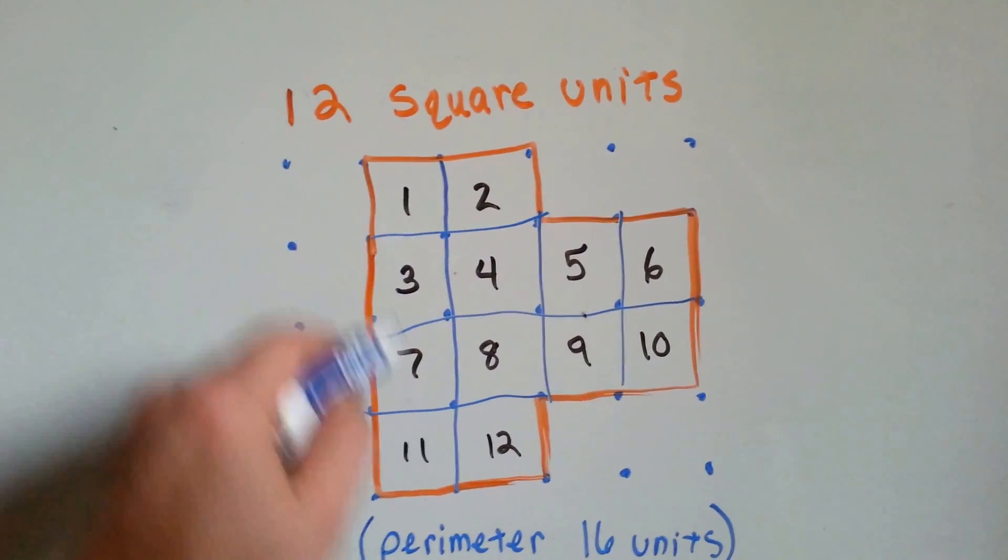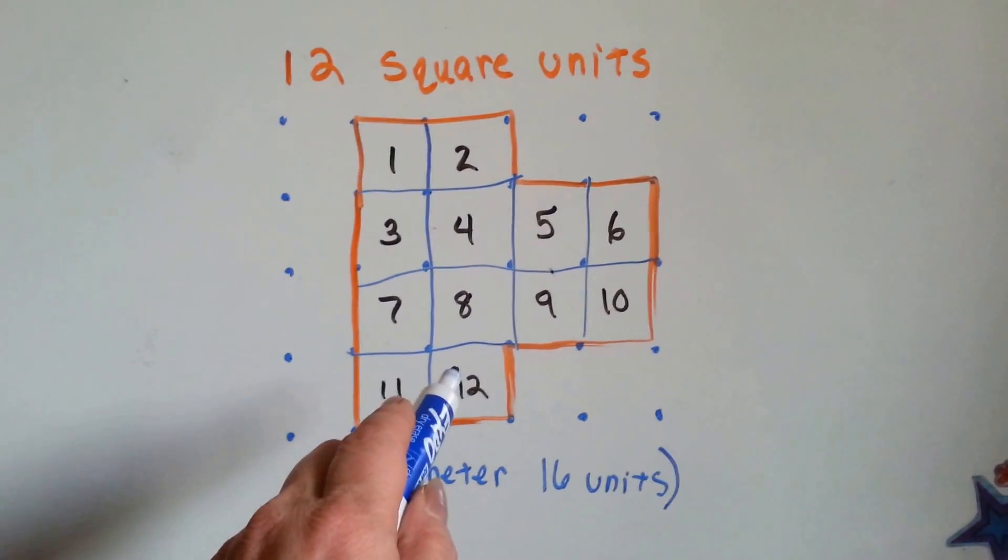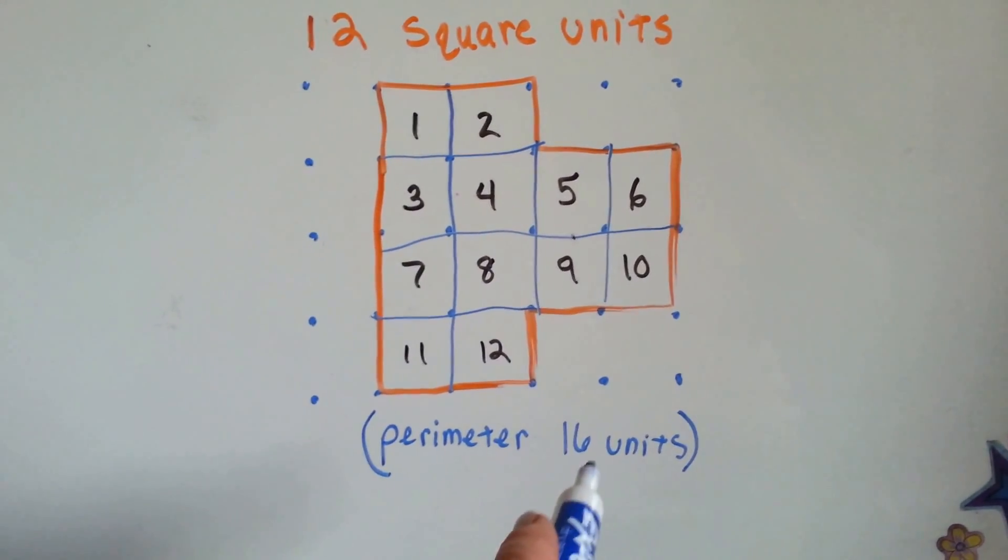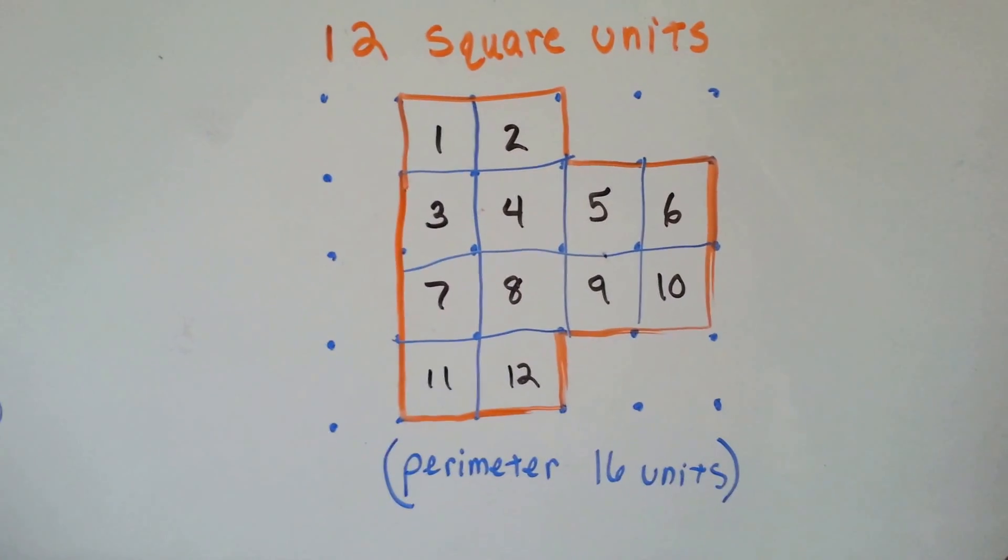These are square units. There's twelve of them. There's twelve squares here, but the perimeter is sixteen linear units. Let's count them.